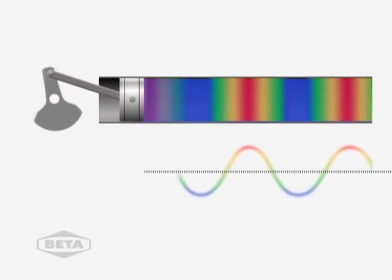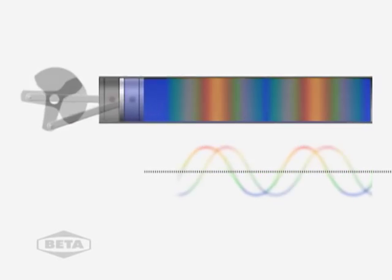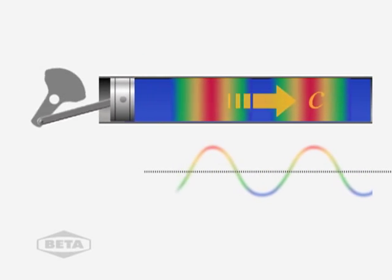As the piston returns, an area of low pressure forms behind the piston. This low pressure also travels away from the piston at the speed of sound.